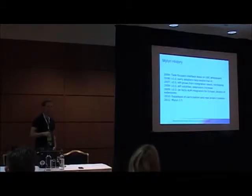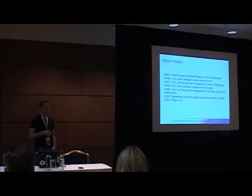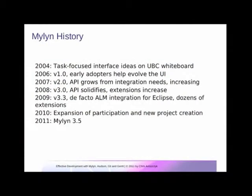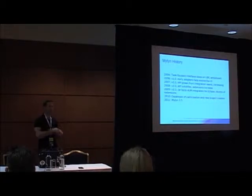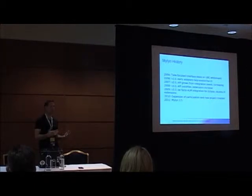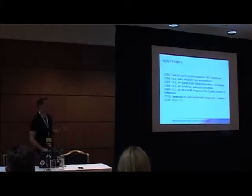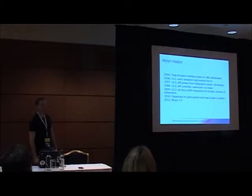A little overview of the history of Mylyn: it started out as a research project back in 2004 from UBC in Canada. It started to grow, had initial releases, got some early adopters, and the API solidified. We released 3.3 in 2009–2010. There was a new Mylyn top-level project started, which basically means Mylyn grew to a point where they wanted to create a high-level project at Eclipse. Within the Eclipse world, achieving top-level project status is generally a huge sign of maturity. And just recently, last month, Mylyn 3.5 came out.